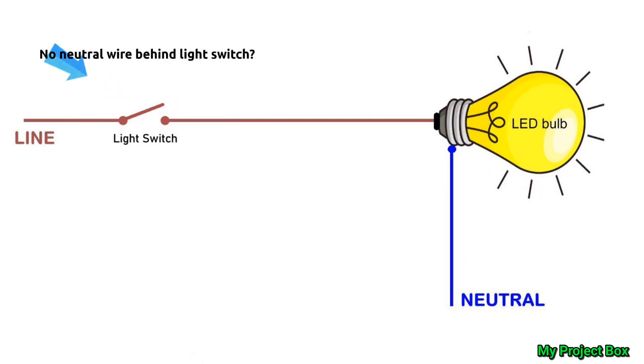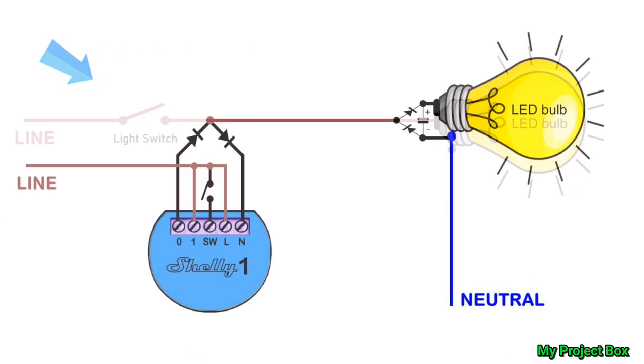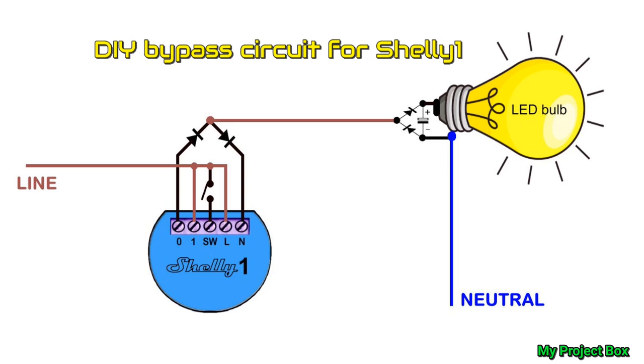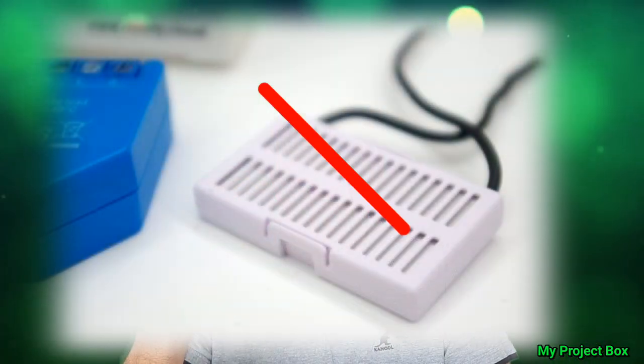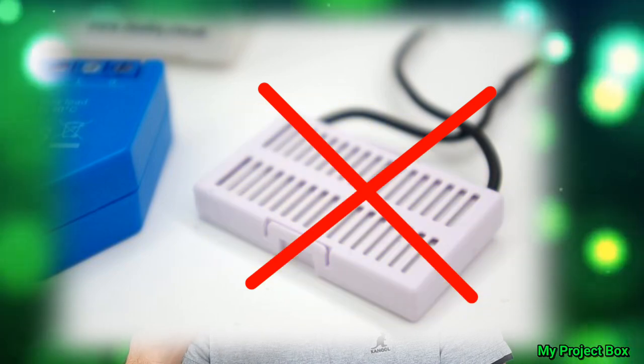We can make our own bypass of sorts at the light bulb and we can make the box standard Shelly 1 work without this neutral wire here. It's just an experimental circuit you guys are welcome to try, but it works perfectly well. The advantages would be that this is slightly cheaper and slightly smaller than the Shelly 1L, and you don't have to buy the bypass either because you'll be making your own. This might also help because it might fit behind your light switch a bit easier because it's smaller.